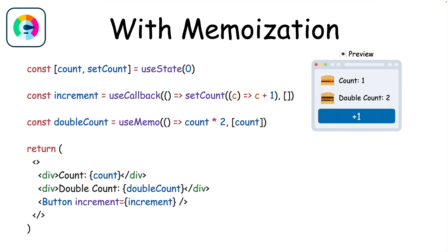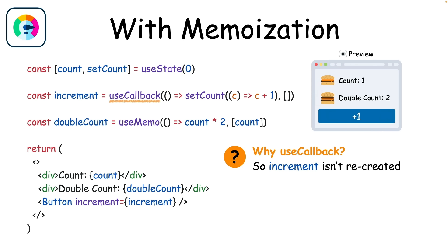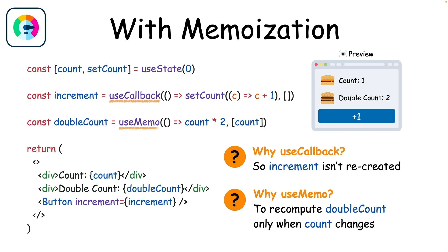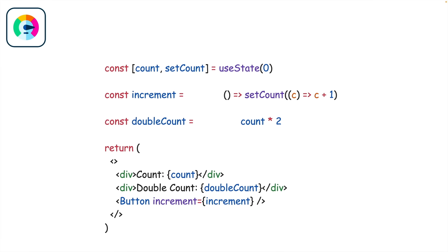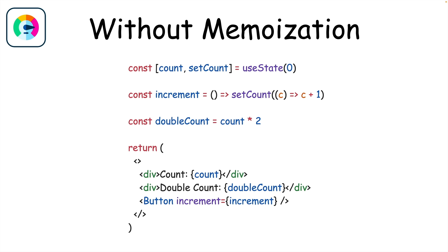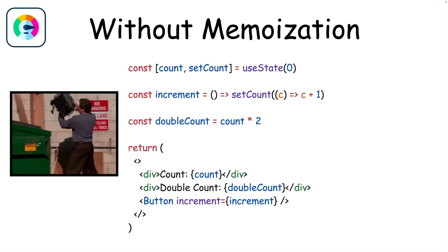In this code, for example, useCallback prevents the increment function from being recreated on each re-render, and useMemo is used to recompute the double count value only when count changes. But now, the new compiler optimizes your React code automatically, so you can completely remove any performance hooks you previously had.